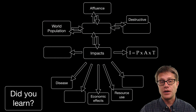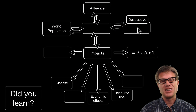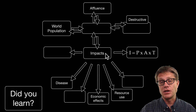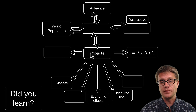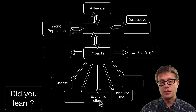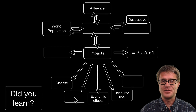Did you learn the following? How population, affluence, and destructive technology can affect the environment? These impacts can be measured through the IPAT equation or the ecological footprint. Remember: if the economy is too big we can have resource use and habitat destruction, but if the economy is too small you get disease and hunger. I hope that was helpful.